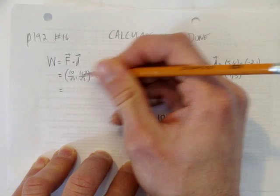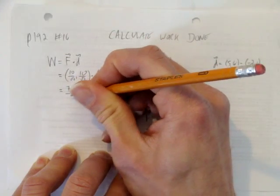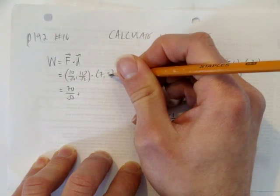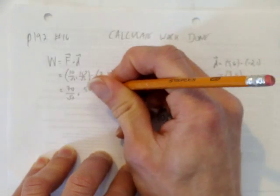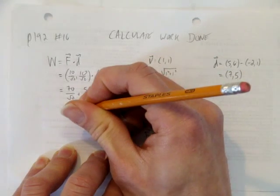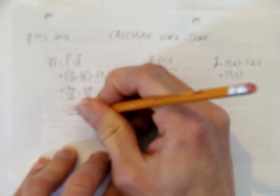And when we take their dot product, just multiply the first components together. So that would be 70 over root 2. And then add the second components multiplied together, which is 50 over root 2. So we get 120 over root 2.